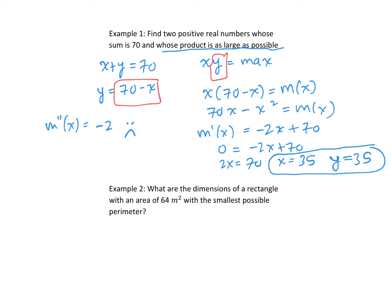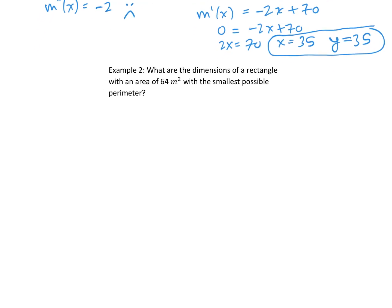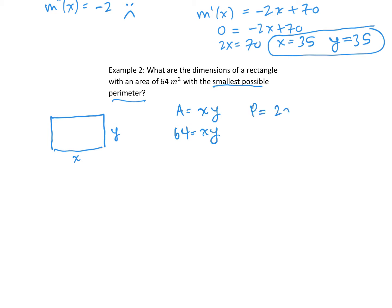The two numbers are 35 and 35. For example two: what are the dimensions of a rectangle with an area of 64 that has the smallest possible perimeter? Drawing a diagram, the dimensions are length times width — x times y — and x times y equals 64. The perimeter would be 2x plus 2y.